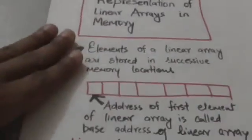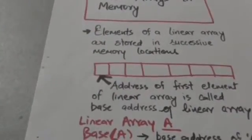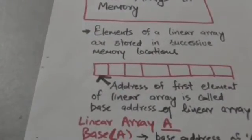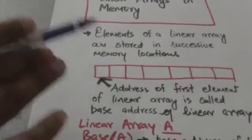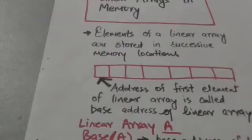If the address of the first element of a linear array and words per memory cell are known, then we can calculate the address of any element of the linear array. The address of the first element is called the base address of the linear array.